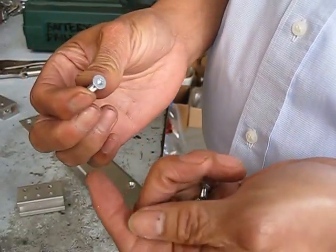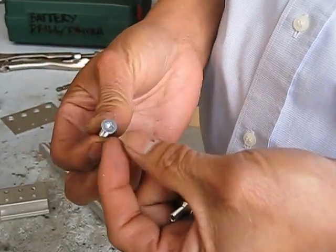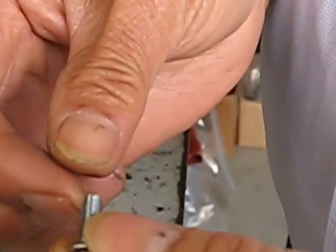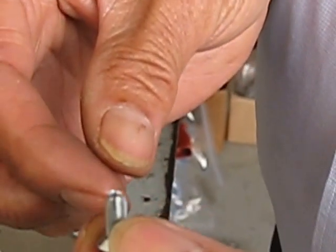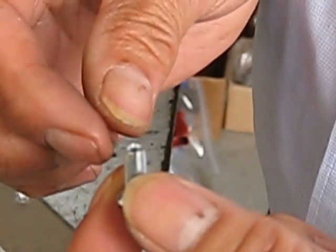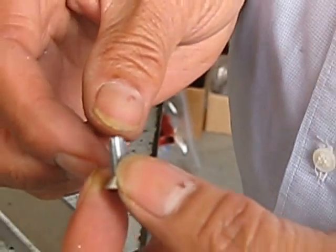I have here a 1032 by a half inch countersunk thread forming screw. This screw makes its own thread rather than tapping a thread.